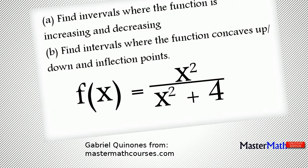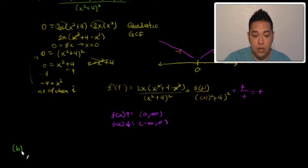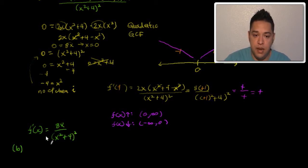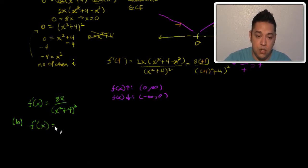For the second derivative, part B, we're going to use the simplified version of the first derivative. The first derivative can be thought of as 8x divided by (x² + 4)². We're going to use that simplified version to find the second derivative. The second derivative is a quotient, so we need to use the quotient rule.